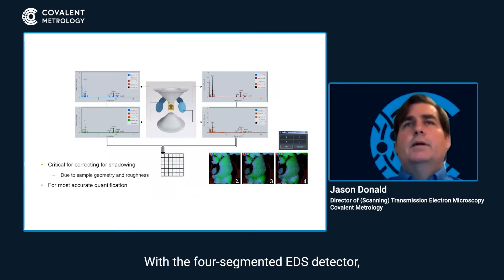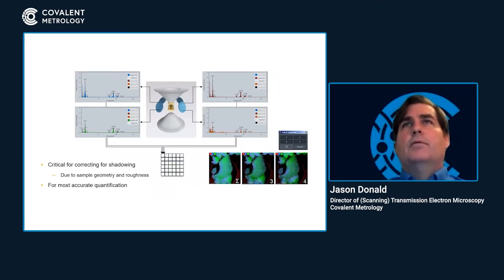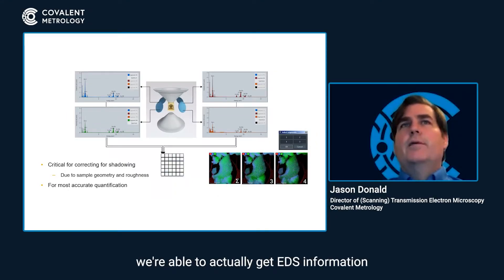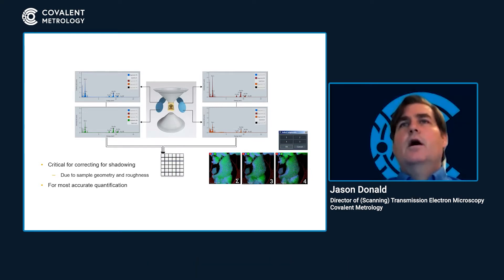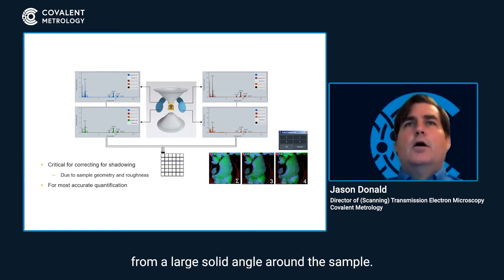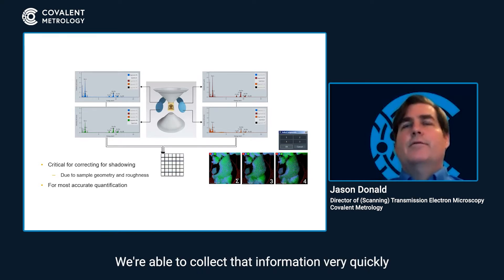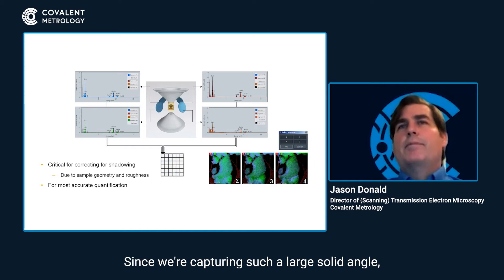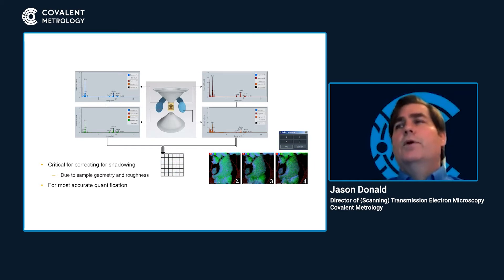With the four-segmented EDS detector developed by Thermo Fisher, we're able to actually get EDS information from a large solid angle around the sample. We're able to collect that information very quickly with the high brightness source. And since we're capturing such a large solid angle,